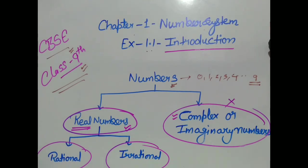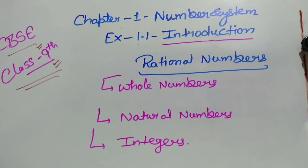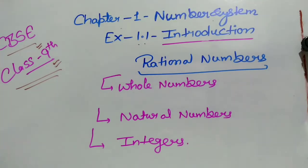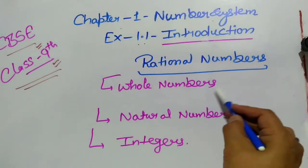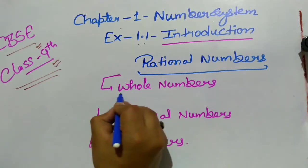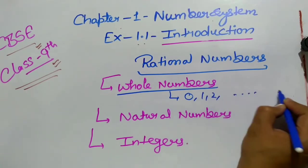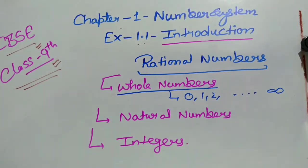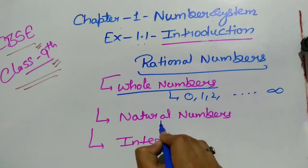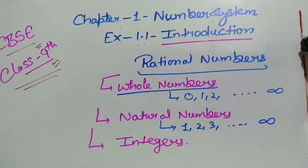Let's start with rational numbers. Before that, let's look at the numbers we have already read — natural numbers, integers, and whole numbers. Whole numbers are those which start from 0 and go up to infinity. Natural numbers start from 1 and go up to infinity — so all numbers from 1 to infinity are natural numbers.